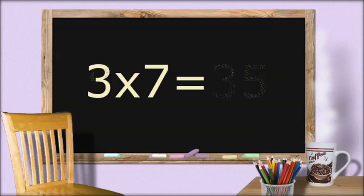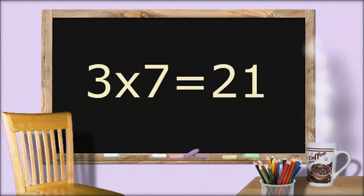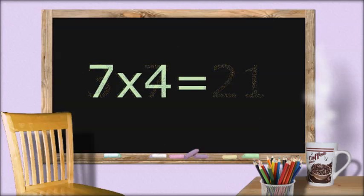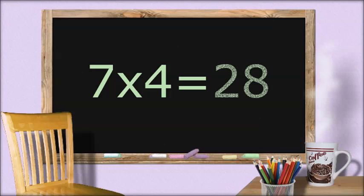3 times 7 equals... 21. 7 times 4 equals... 28.